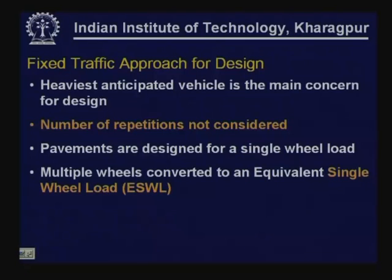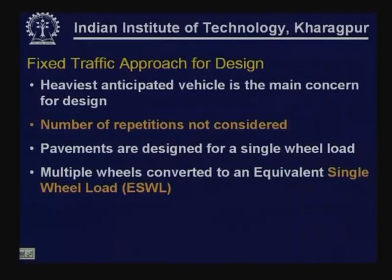Pavements are designed for a single wheel load. The entire configuration — number of axles and number of wheels per axle — must be converted into a single equivalent load that produces a similar damaging effect on the pavement. This is the equivalent single wheel load (ESWL), which is the input parameter for designing facilities where the heaviest vehicle is the primary concern.